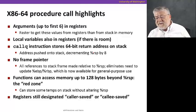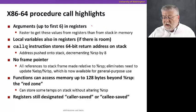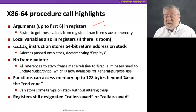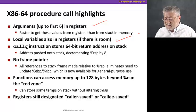The highlights of this for the 64-bit case are that arguments up to the first six are stored in registers. It's faster to get to those values there than if they were in memory in the stack. Local variables can also be placed in registers if there's room and we don't have too many of them. Otherwise, we will have to go back to the stack.